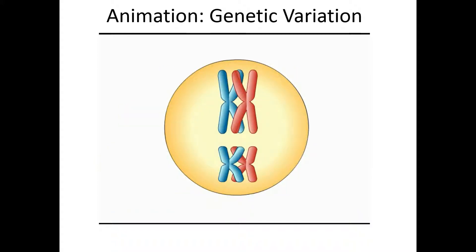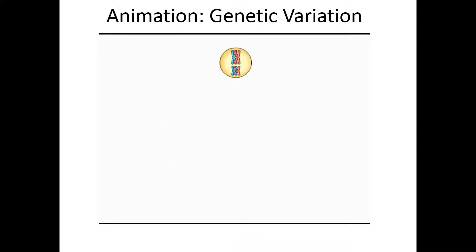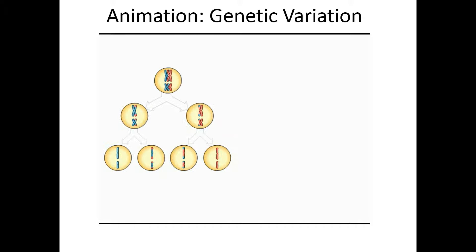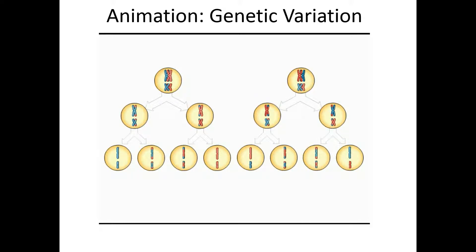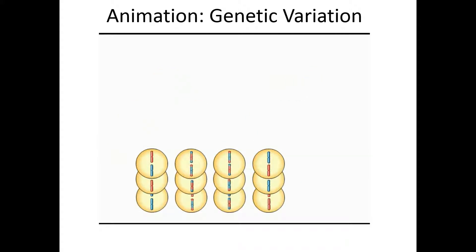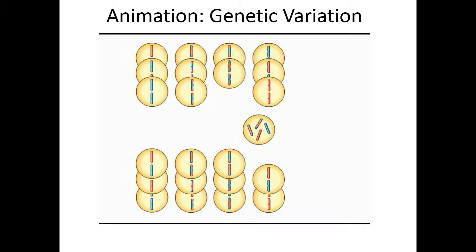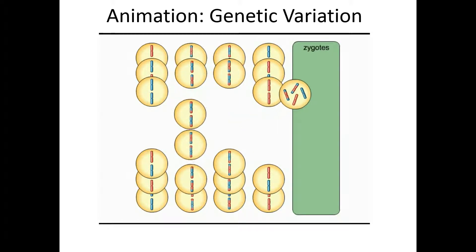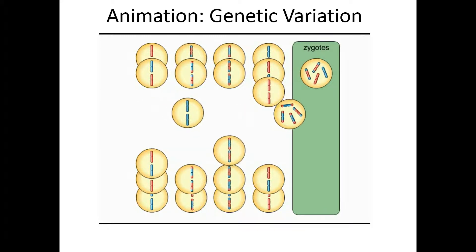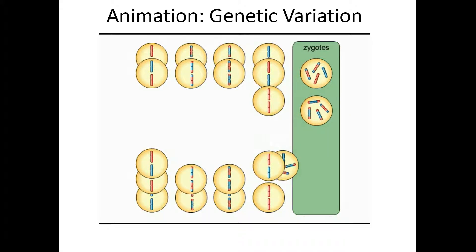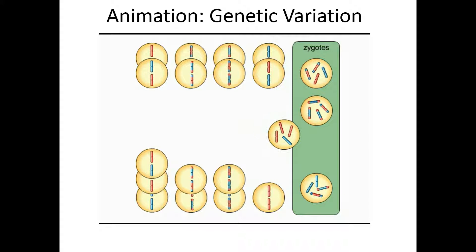Independent orientation and crossing over occur simultaneously during meiosis, multiplying the number of genetic variations among gametes. Because each pair lines up independently and crossovers can occur almost anywhere, a human being can produce an almost infinite variety of gametes. A sperm fertilizes an egg producing a zygote, and the random nature of fertilization adds further variation. Theoretically, one human couple is capable of conceiving a number of genetically different offspring far greater than the number of humans who have ever lived.